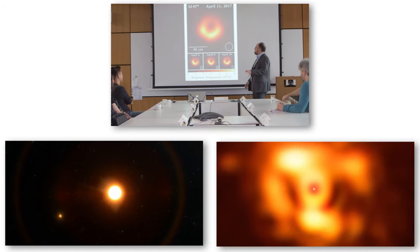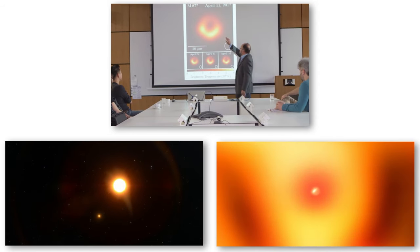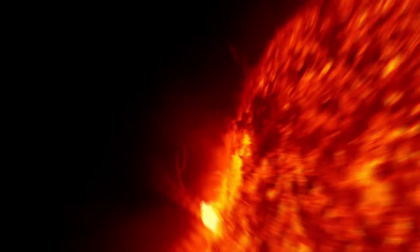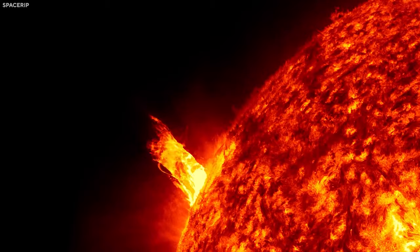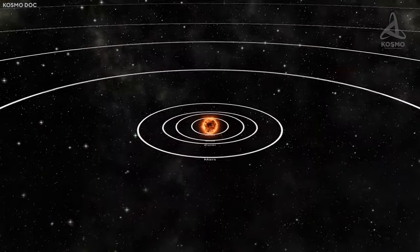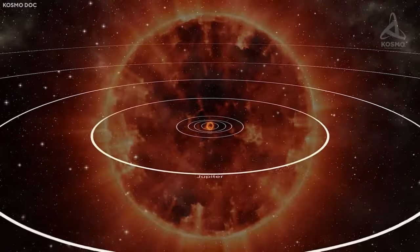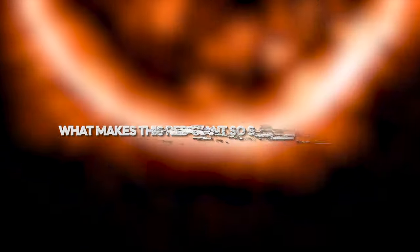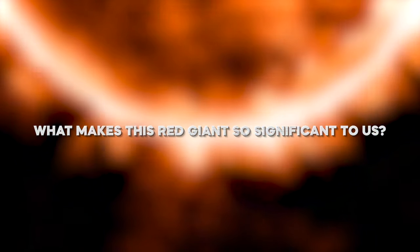Scientists classify Betelgeuse as a red supergiant, estimating its mass to surpass that of the Sun by 10 to 20 times. To better understand Betelgeuse's sheer enormity, let's consider this: if Betelgeuse replaced our Sun, its edges would stretch all the way to Jupiter, which means it is in no way similar to the size of the Sun. What makes this red giant so significant to us?